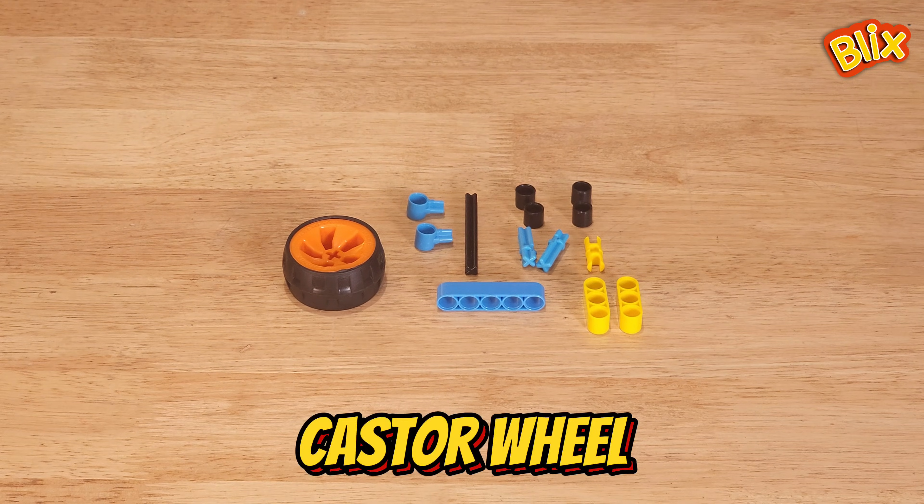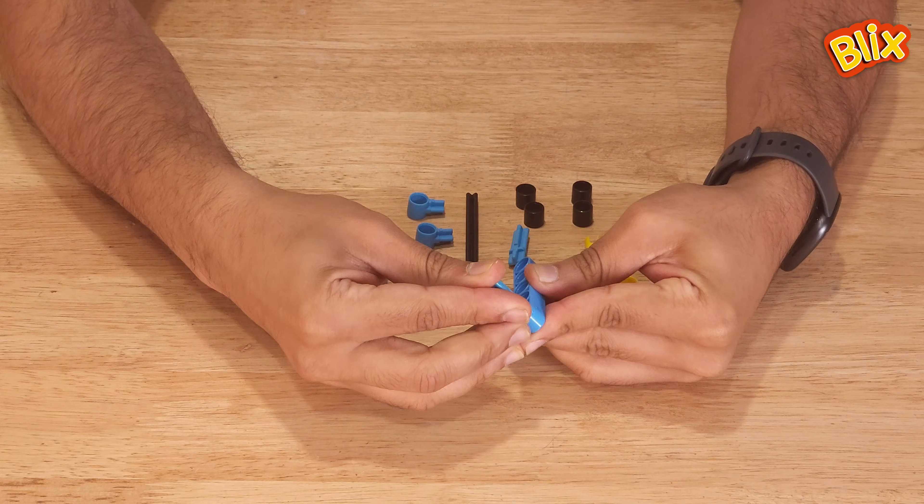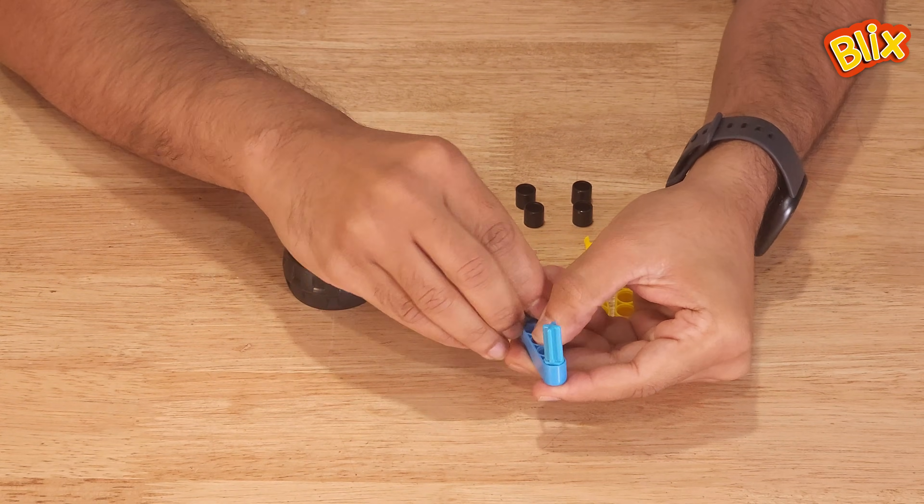Now let us see how to build a caster wheel. First, take the P5 piece, attach two CT3s at the two ends like this.